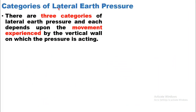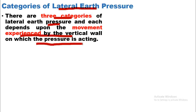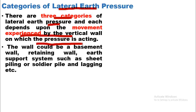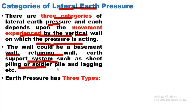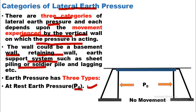If we divide the lateral earth pressures, there are three categories, and each depends on the movement experienced by the vertical wall on which the pressure is acting. The wall could be a basement wall, retaining wall, or an earth support system such as sheet piling, soldier pile and lagging, etc. The three types of earth pressure are: at rest earth pressure, denoted by K naught; active earth pressure; and passive earth pressure. We will discuss these three types one by one in upcoming slides.